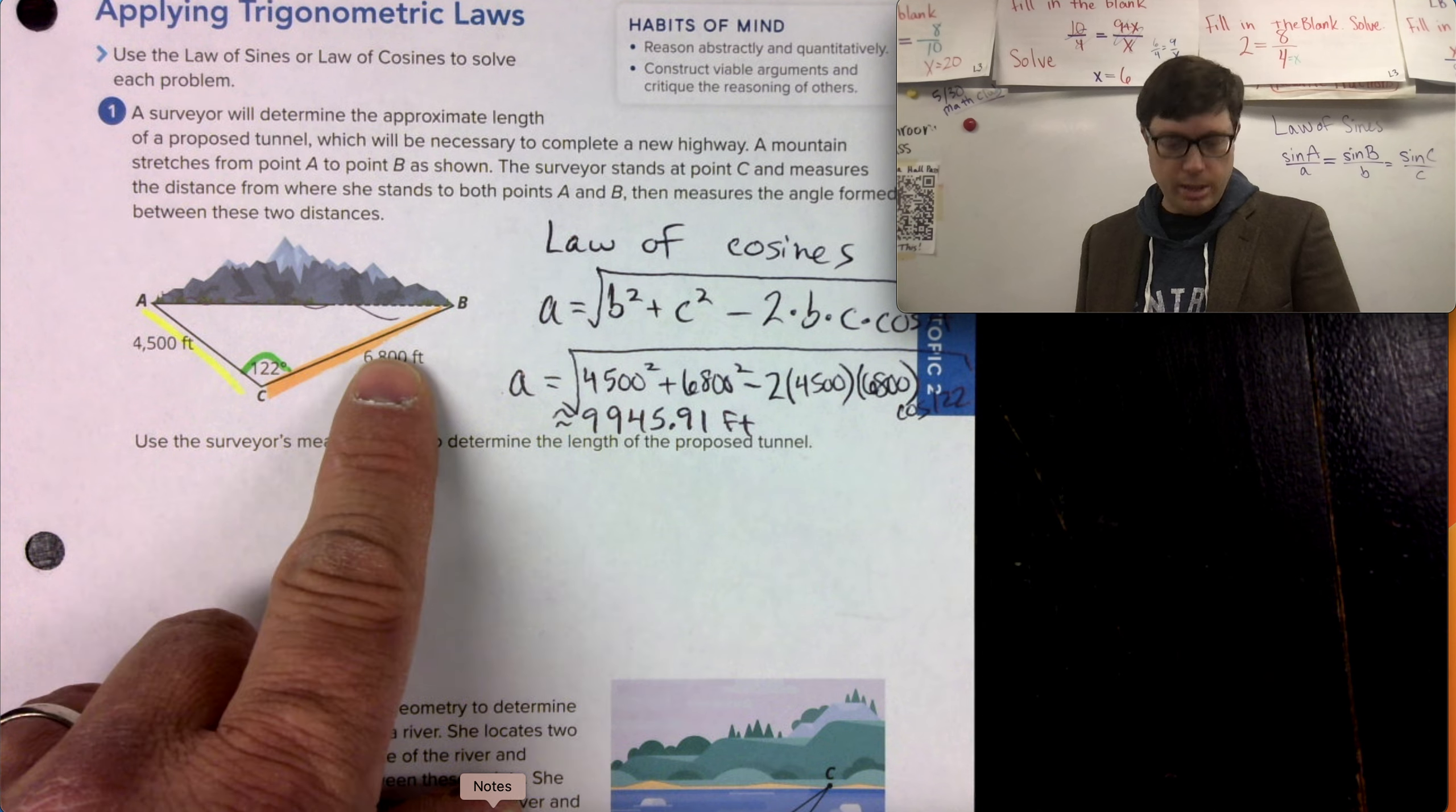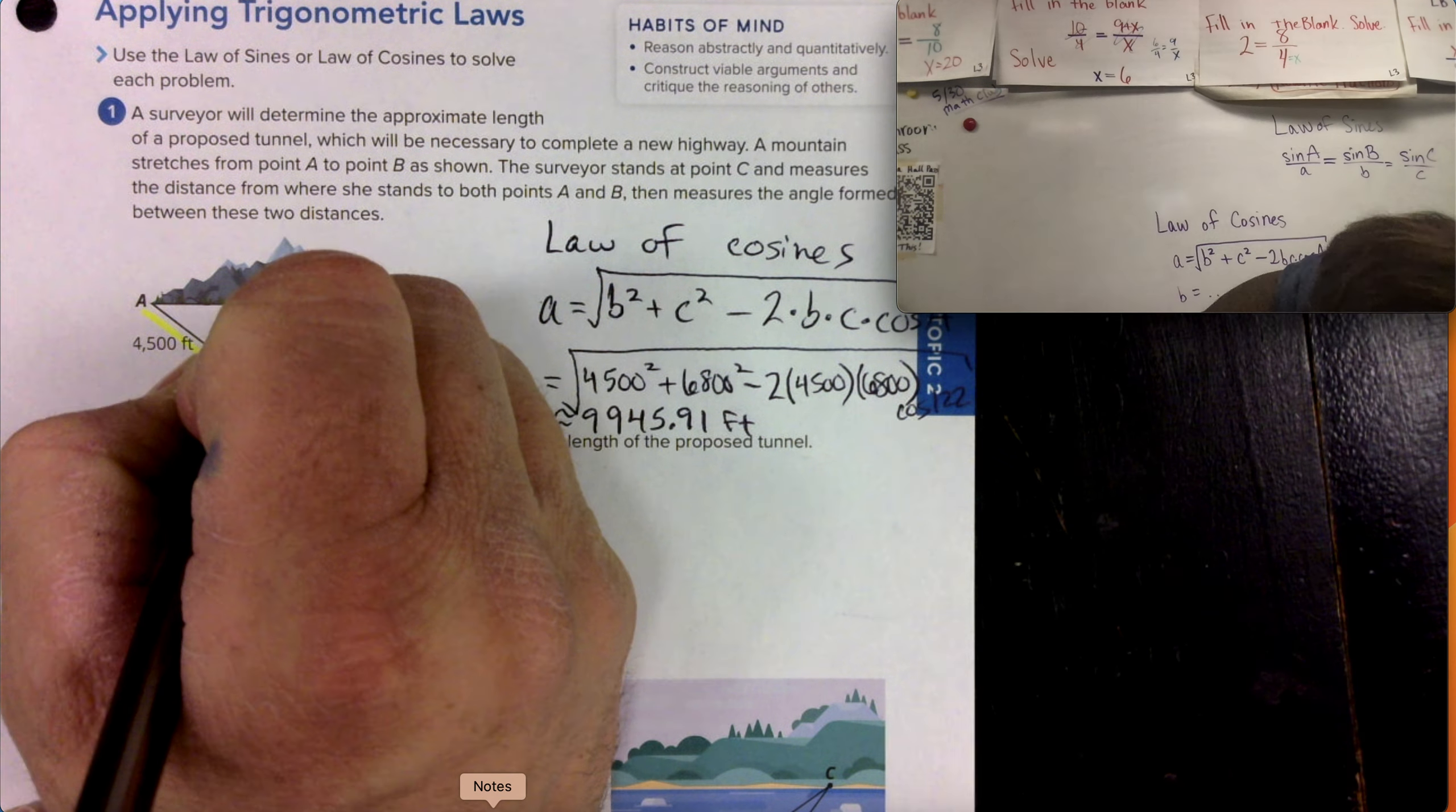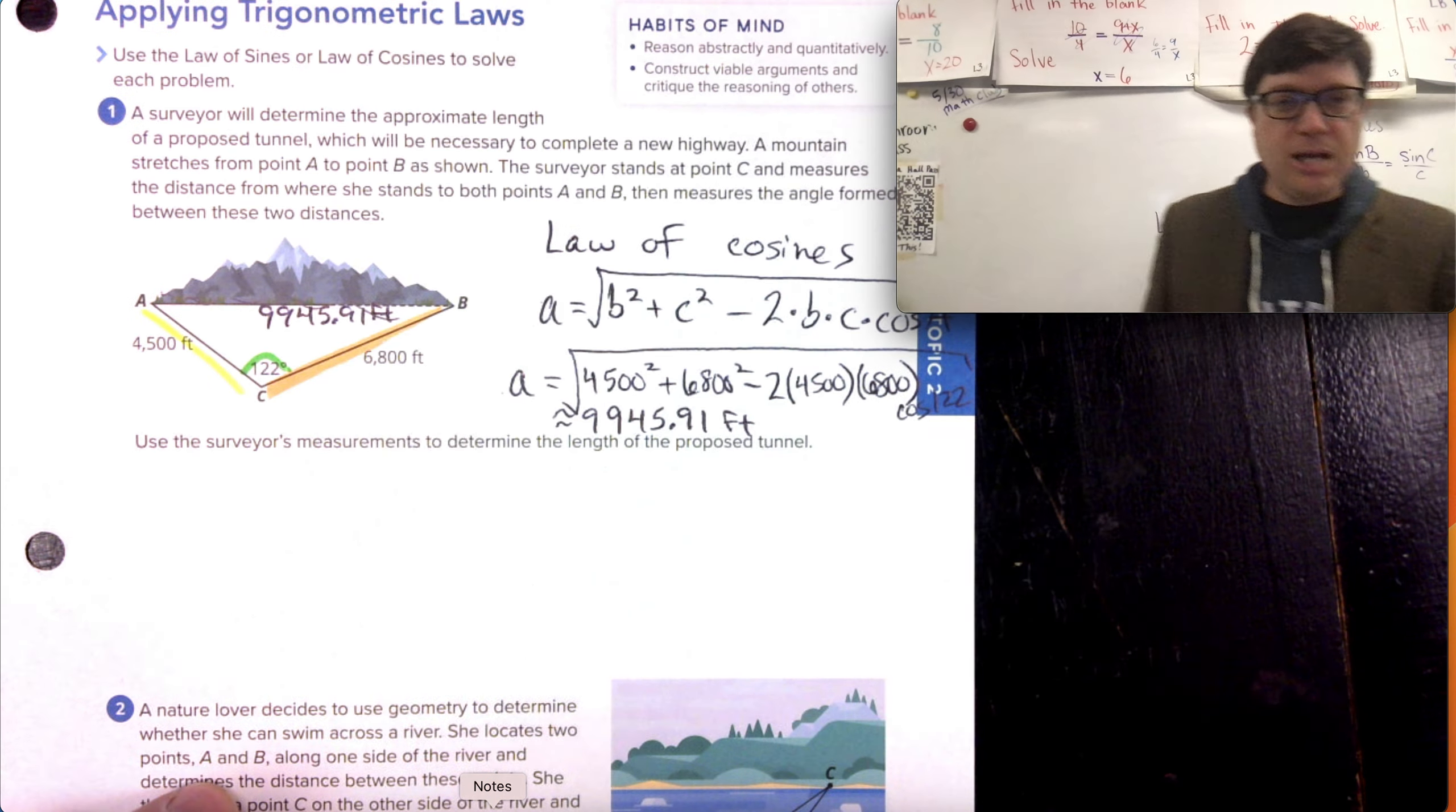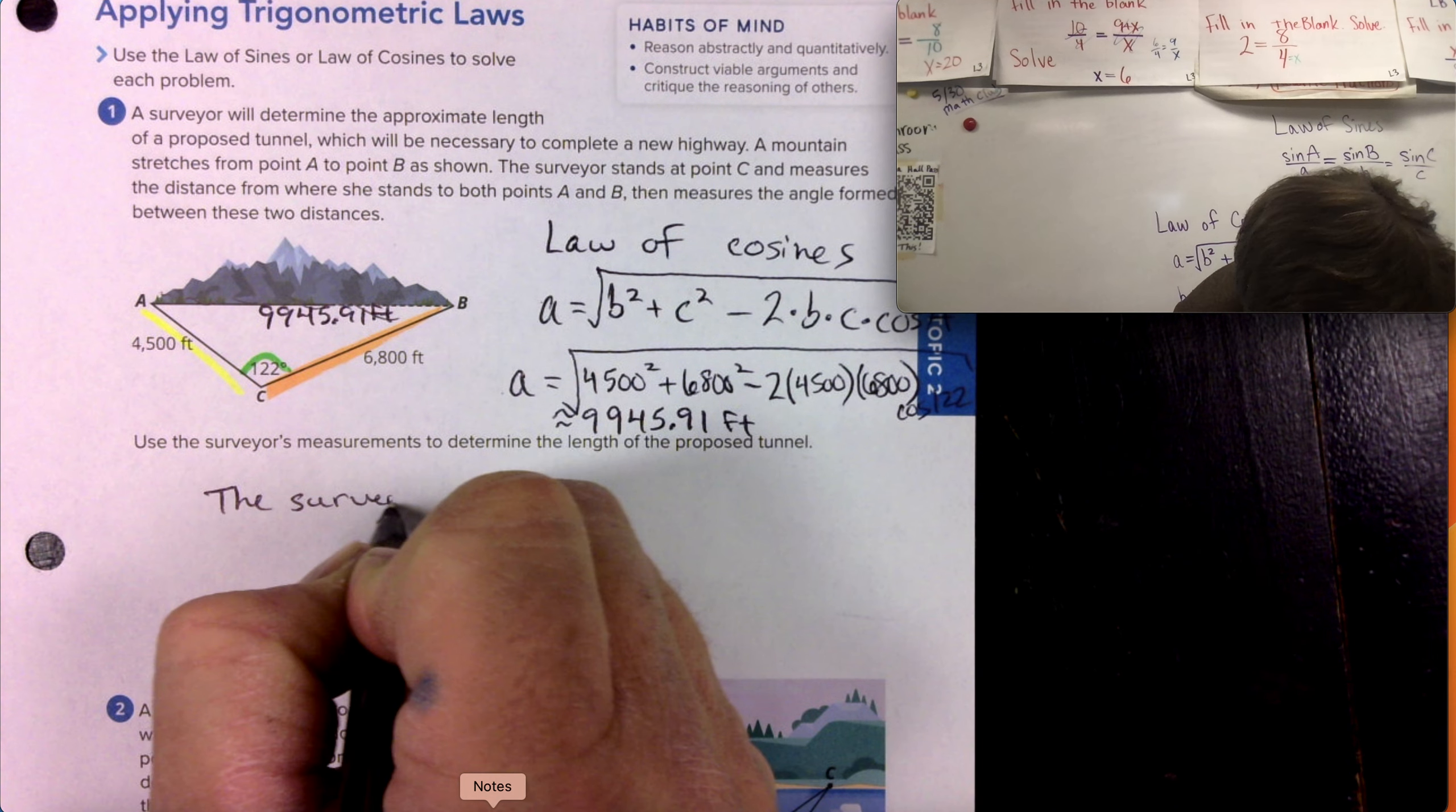Approximately 9,945.91 feet. Almost two miles. So a mile one way, a little over a mile the other way. It's not quite a mile. It's a little less than, a little more than, but the distance between them separated by 122 degrees. 9,945.91 feet. Pay no attention to the bell. The bell is not for you. It's for me. That's how long the tunnel should be.